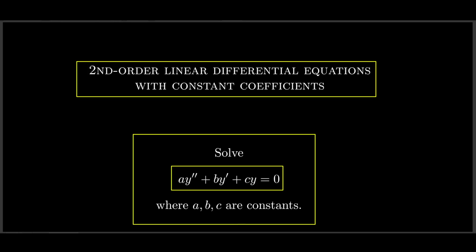In this video we are discussing how to solve second-order linear differential equations with constant coefficients. Our aim is to solve any differential equation of this form, where the coefficients a, b, and c are just any numbers. From general theory, since this is a second-order homogeneous linear equation, the general solution is a linear combination c1·y1 + c2·y2, where y1 and y2 are any two linearly independent solutions.